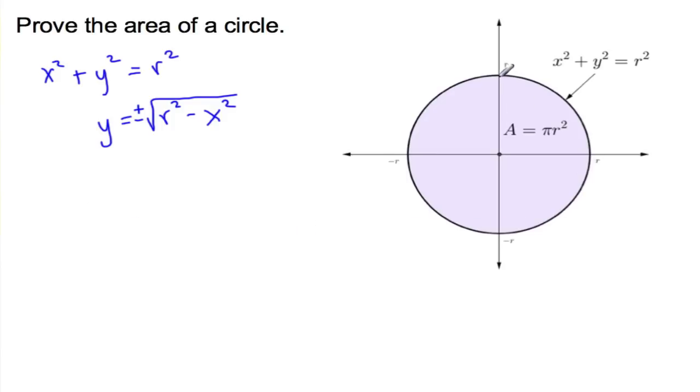Alright, so now what I'm going to do is I'm only going to integrate, I'm only going to find the area of this piece right here. That'll be easier when I integrate, and then I'll multiply my answer by 4, and it should end up being pi r squared.